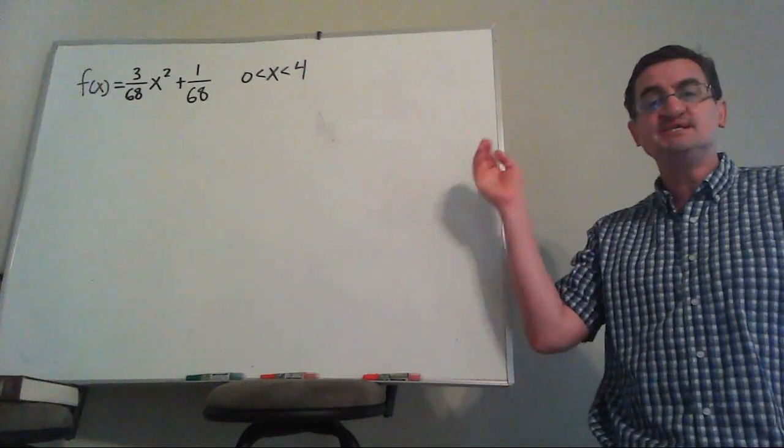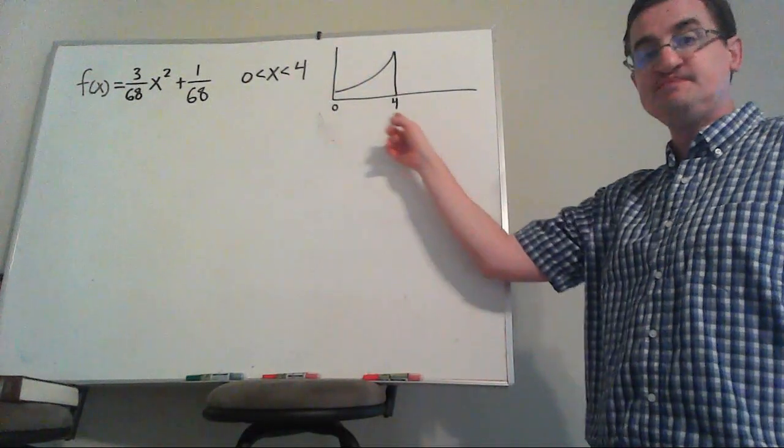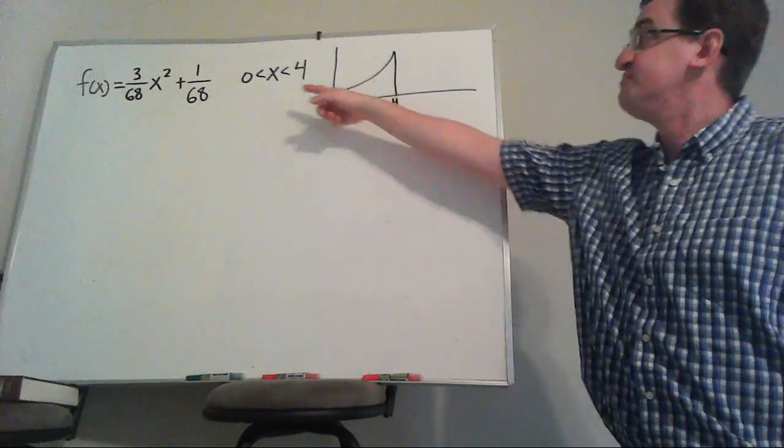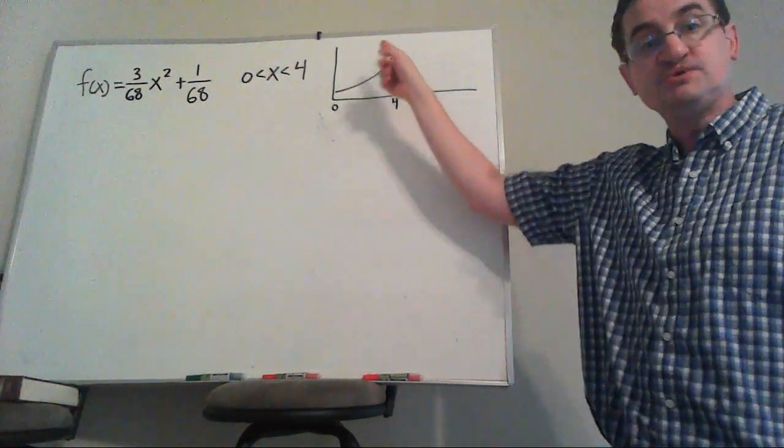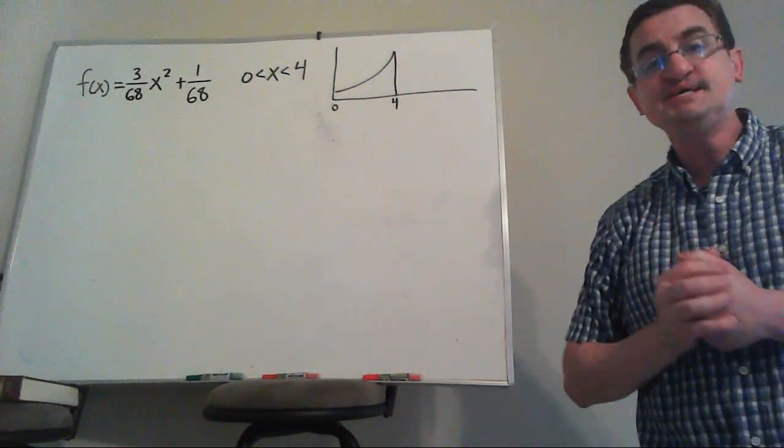So instead of trying to list out all the x's, it probably makes more sense to draw a picture. The x values range from 0 to 4. They start off pretty small, but as we get closer to 4, we're going to have higher x values, which means higher probability. So something like this.